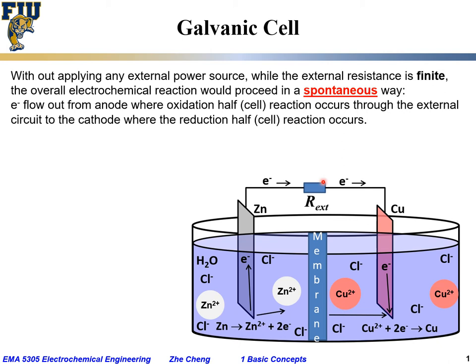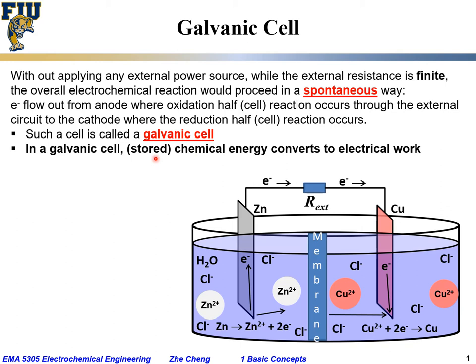This is the so-called spontaneous process — without an external power source and when the external circuit resistance is finite. Under this condition, the electrochemical cell is called a galvanic cell. It is a natural process: in such a galvanic cell, the stored chemical energy is converted to electrical work, whether it's electrons passing through an external resistor to heat it up or to light up a light bulb. This conversion from stored chemical energy to electrical work defines a galvanic cell.